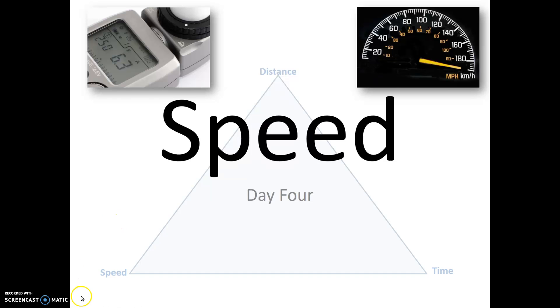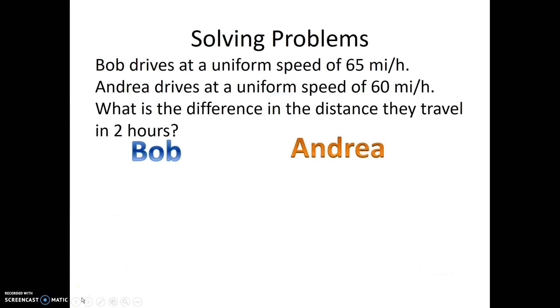Go ahead and if you haven't already, do all the problems on the front page, and then turn with me to number six. In this problem, Bob drives at a uniform speed of 65 miles per hour. Andrea drives at a uniform speed of 60 miles per hour. What is the difference in the distance they travel in two hours?